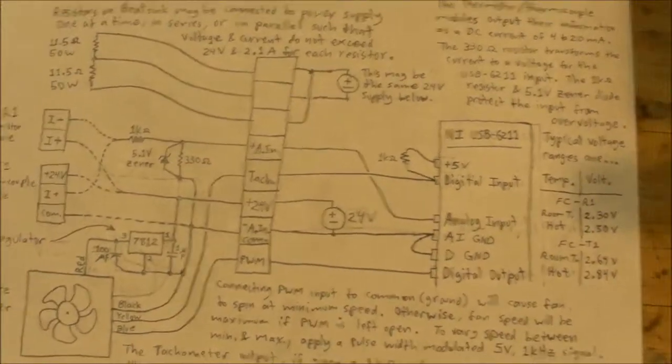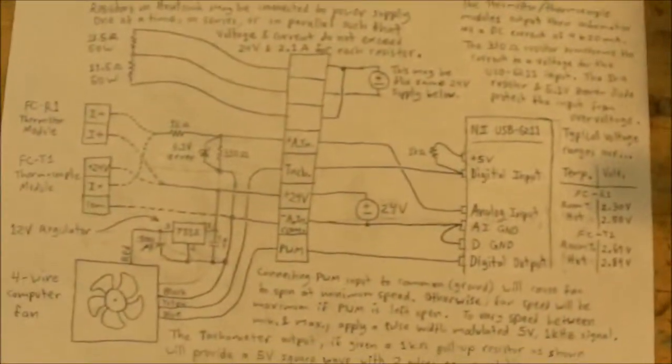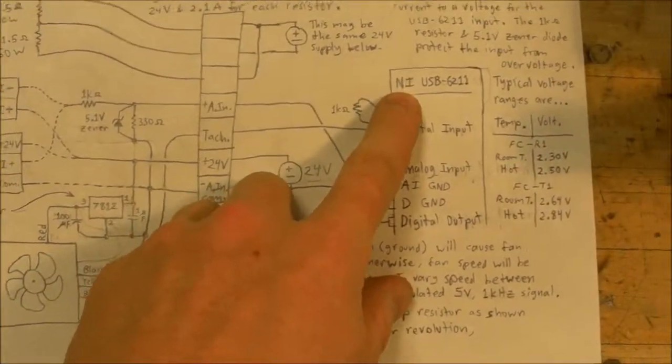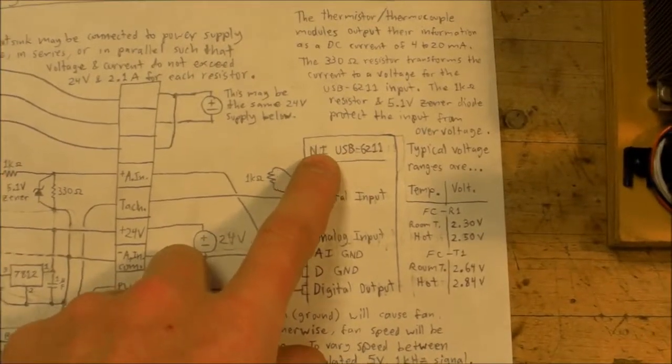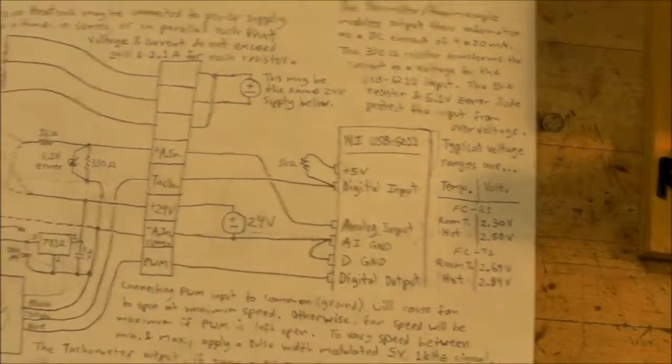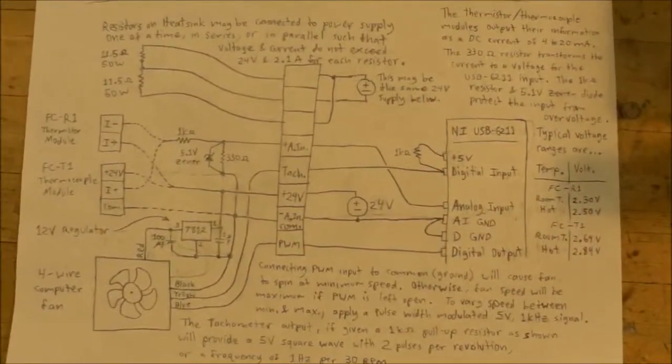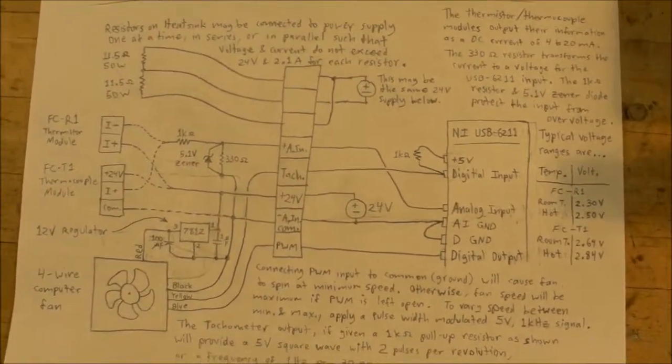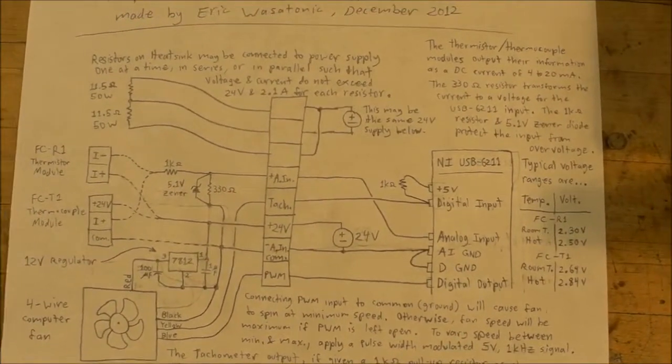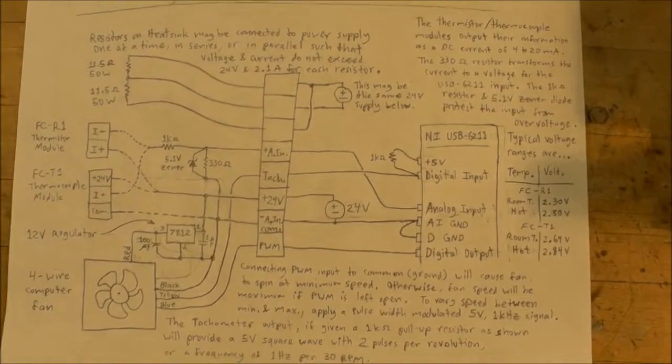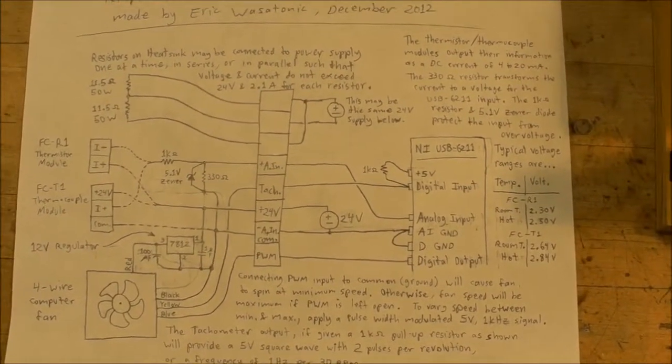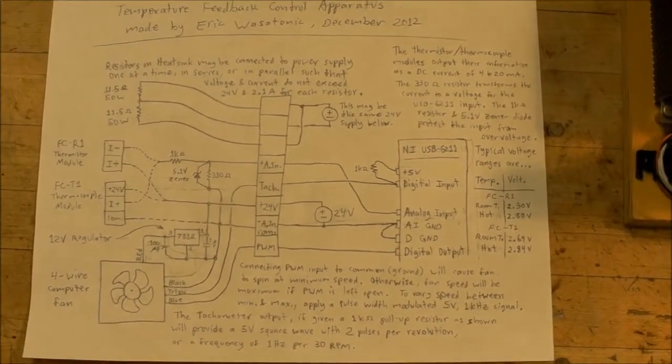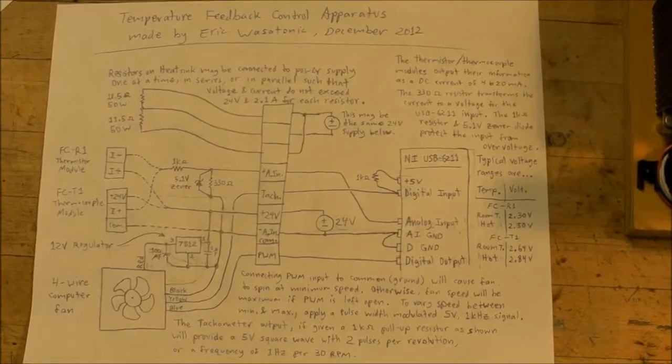The NI National Instruments USB 6211 control module has a whole bunch of analog inputs and outputs and digital on that thing too. But that's basically what it looks like or what it's going to look like when I give this to the teacher so he can hook it up for his students.